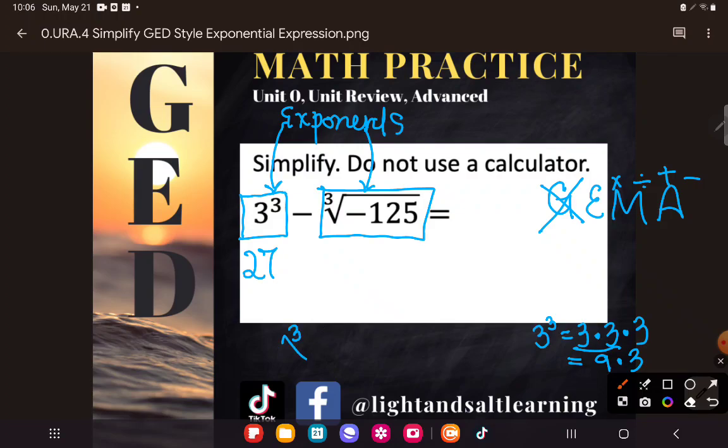The cubed root of -125, well cube root is the opposite of cubing. So basically what I'm asking here is what number if I raised it to the third power would give me -125.